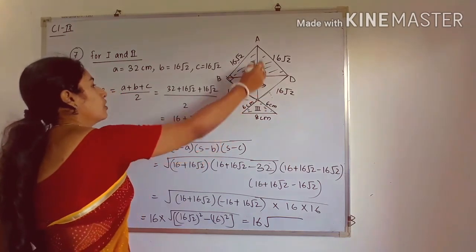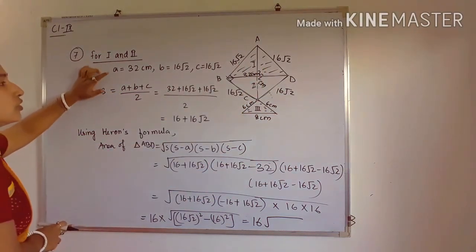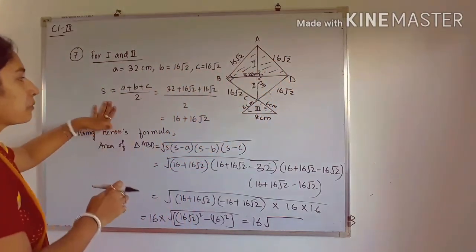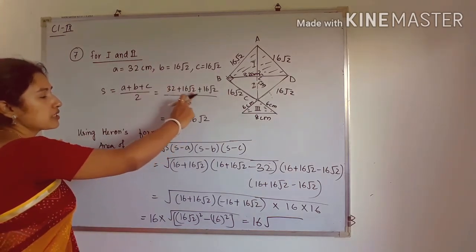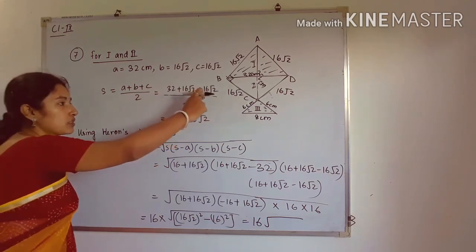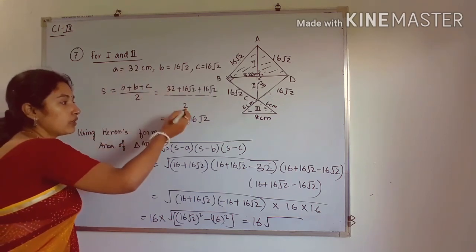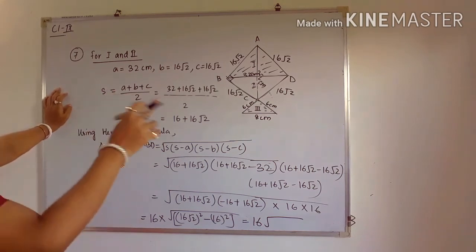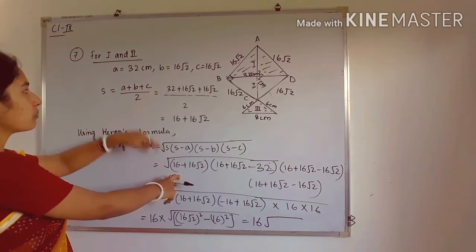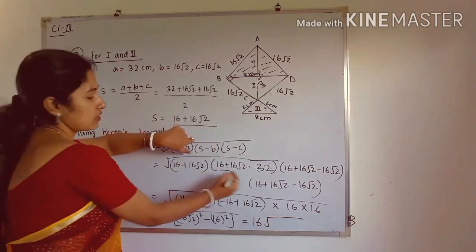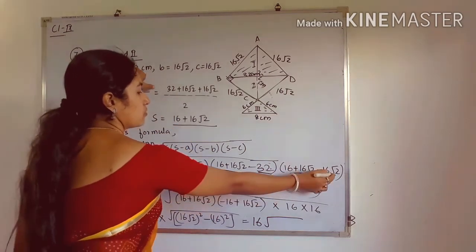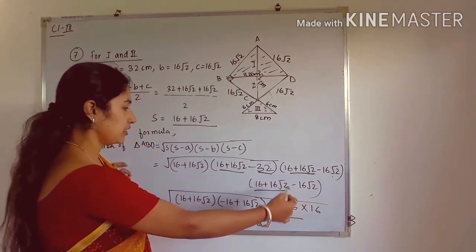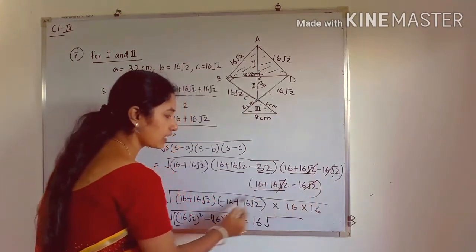Applying Heron's formula to triangle ABD: area = √(S × (S−A) × (S−B) × (S−C)), where S = 16 + 16√2, A = 32, B = C = 16√2. Substituting: S−A = 16√2 − 16, and S−B = S−C = 16. The last two brackets give 16 × 16, which pairs to give 16 outside the square root.